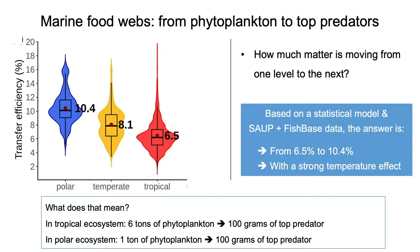And we found that the transfer efficiency is 6.5% in tropical ecosystems and 10.4% in polar ecosystems. But this means that to produce a small quantity of predators, for example, 100 grams of top predators, six tons of phytoplankton is required in tropical ecosystems, whereas only one ton of phytoplankton is required in polar ecosystems.